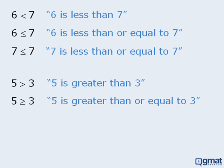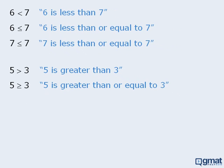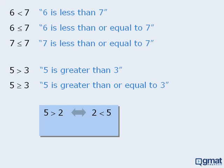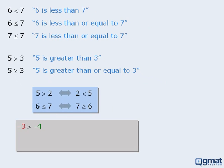It's important to note that we can express the same inequality in two ways. For example, we can take the statement 5 is greater than 2 and rewrite it as 2 is less than 5. Both statements express the same inequality. Similarly, the statements 6 is less than or equal to 7 and 7 is greater than or equal to 6 express the same idea. I happen to be partial to rewriting inequalities so that the inequality sign opens to the right, so the smaller number is always to the left of the larger number, in the same way that they appear on the number line.